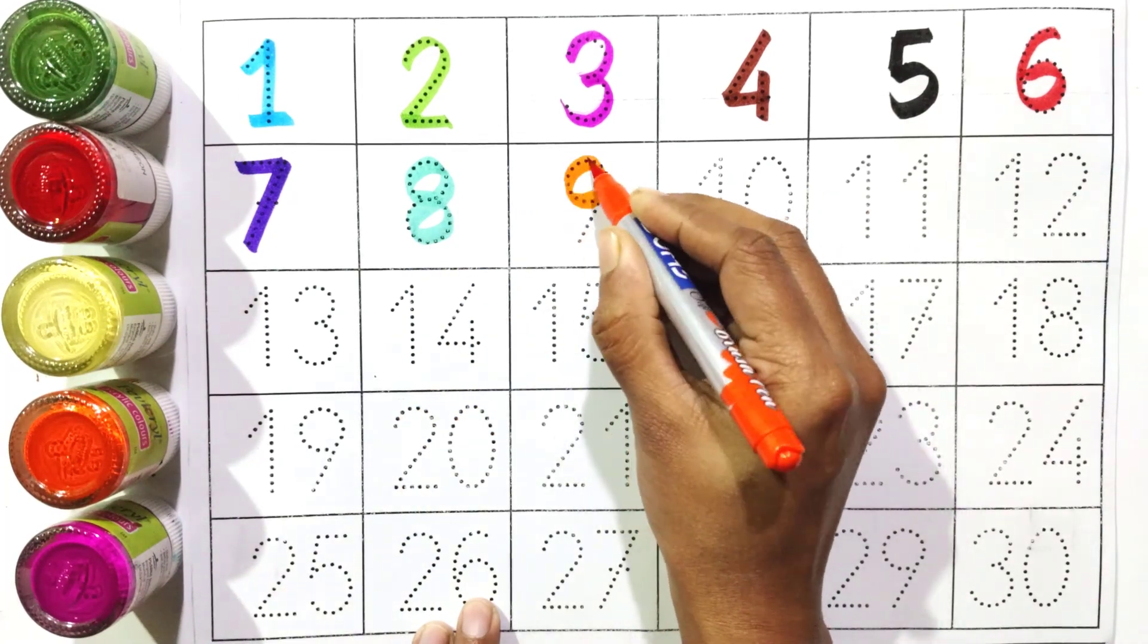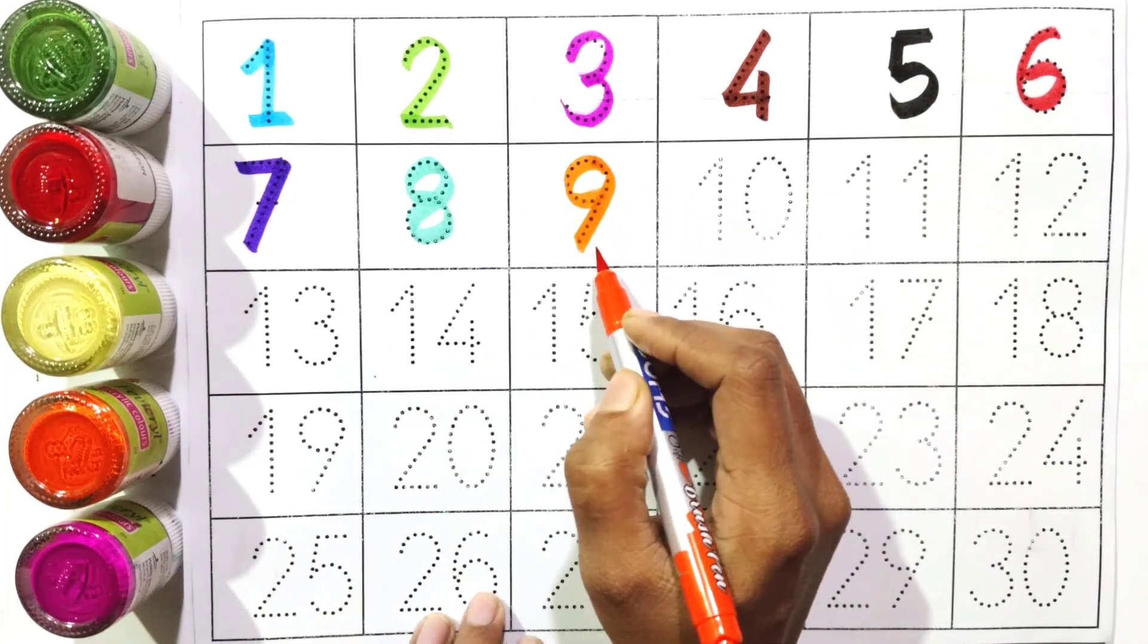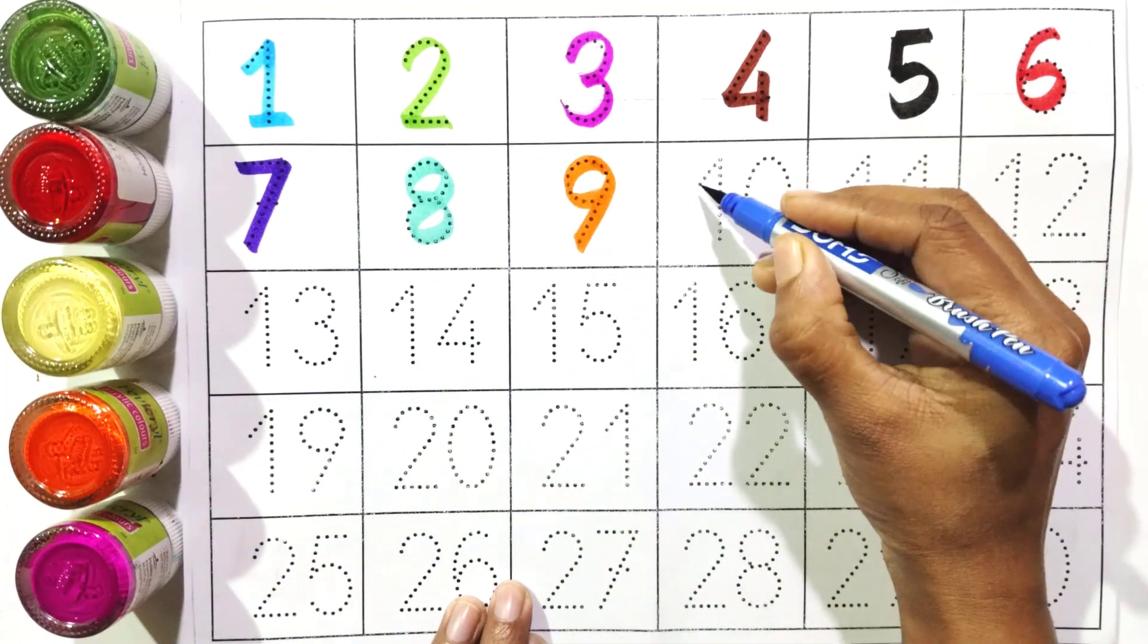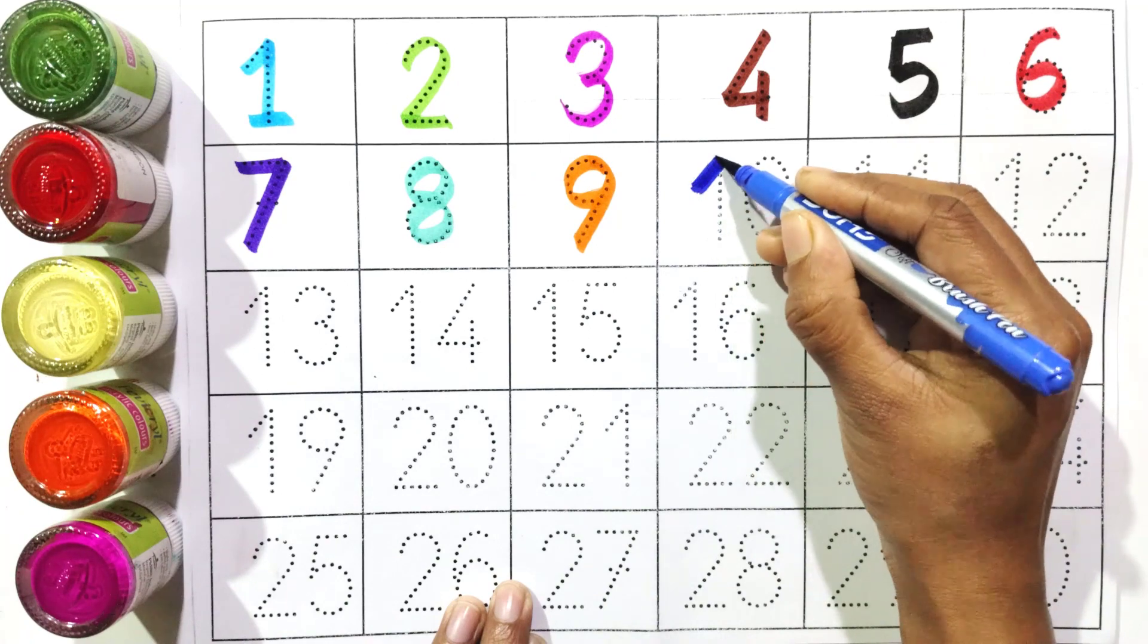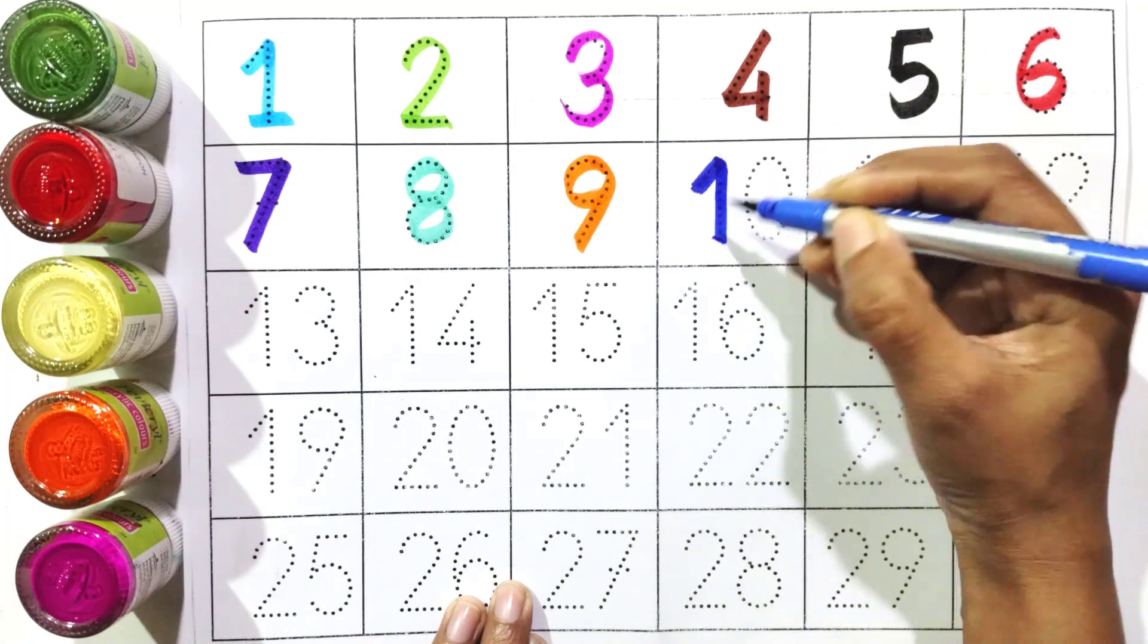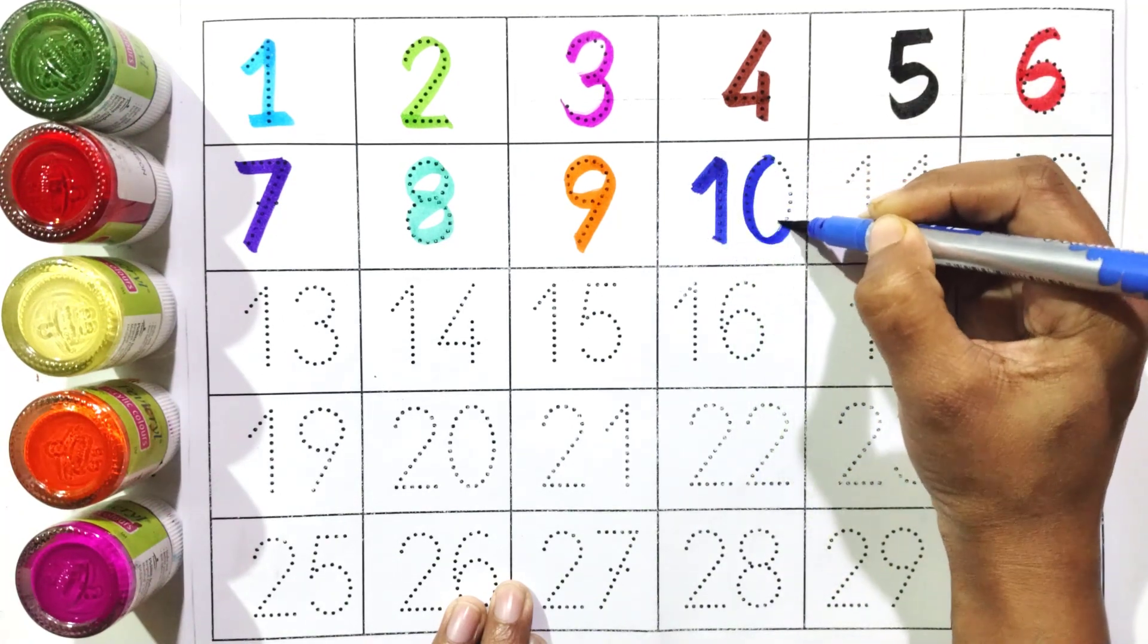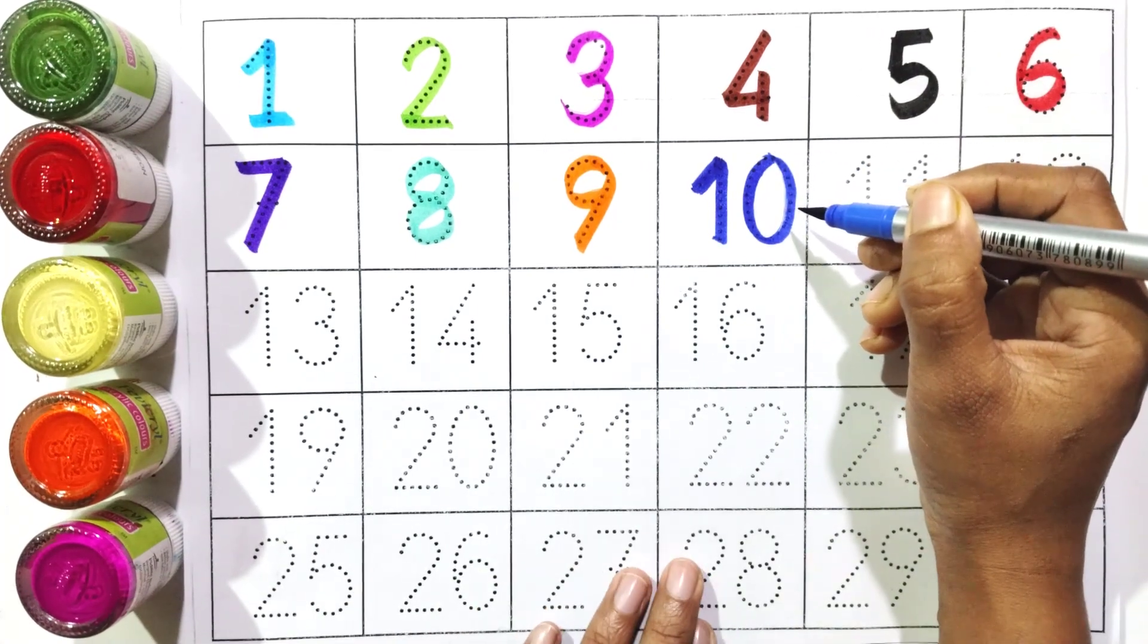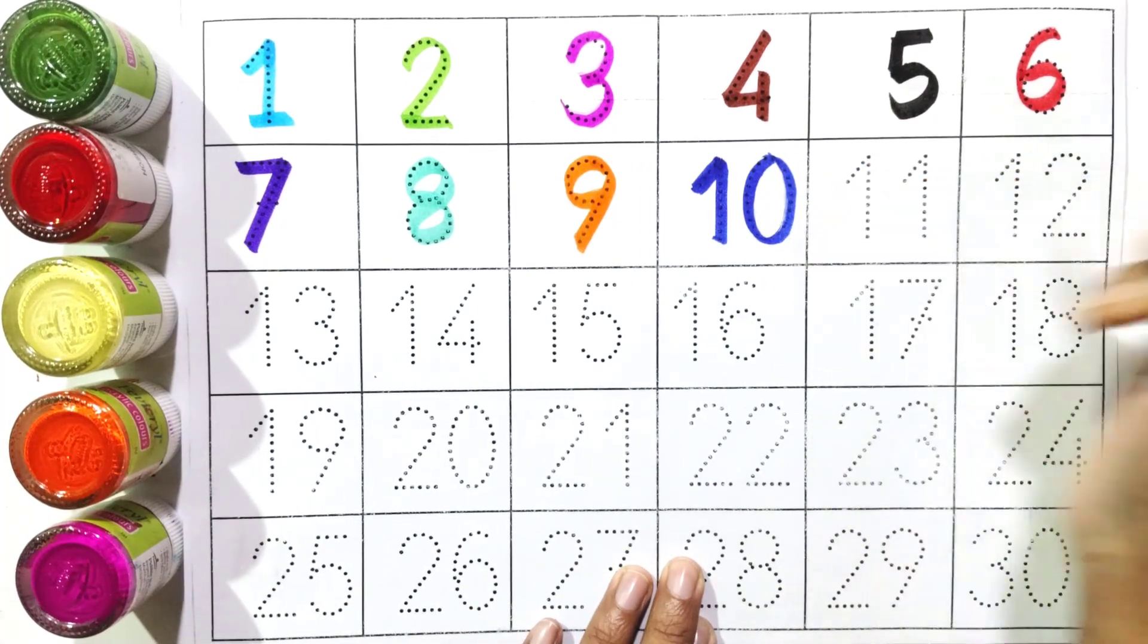Nine, nine. One and zero: ten. Say with me: ten, ten.